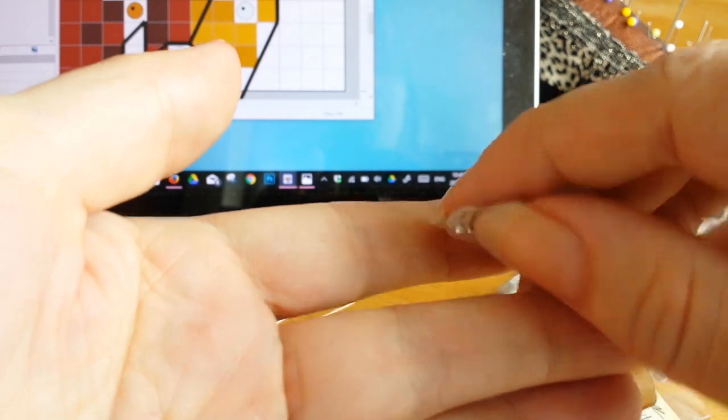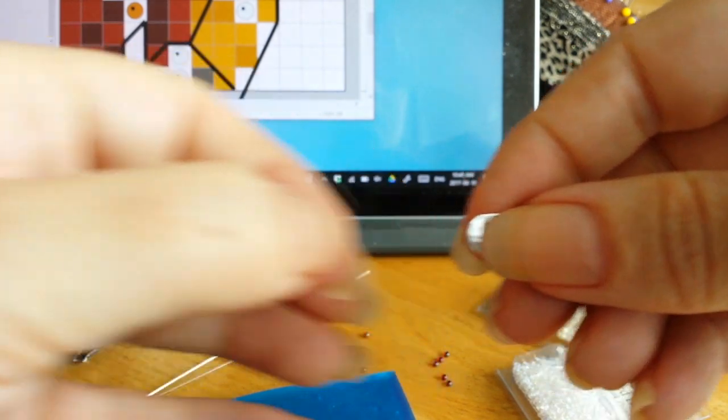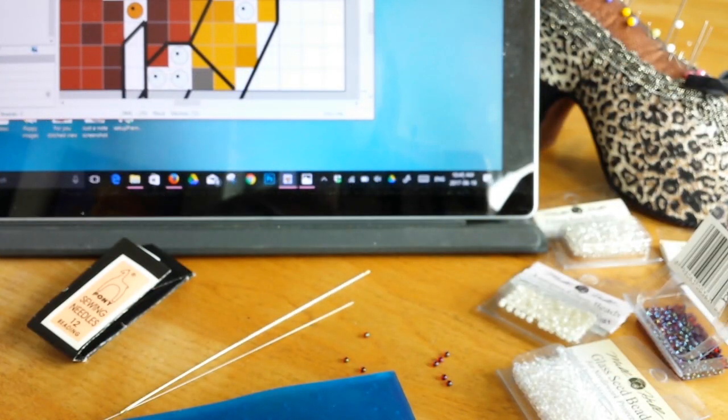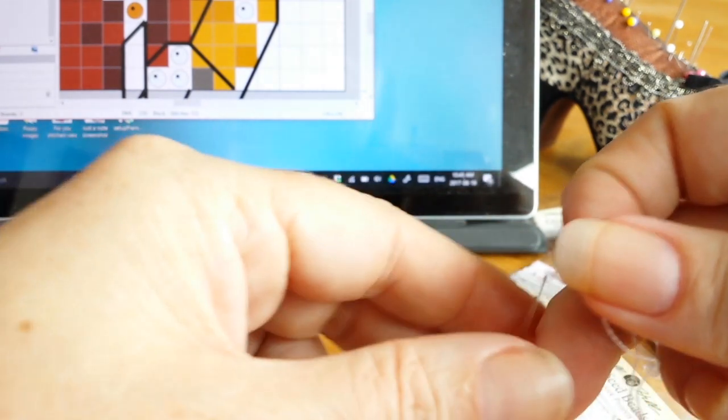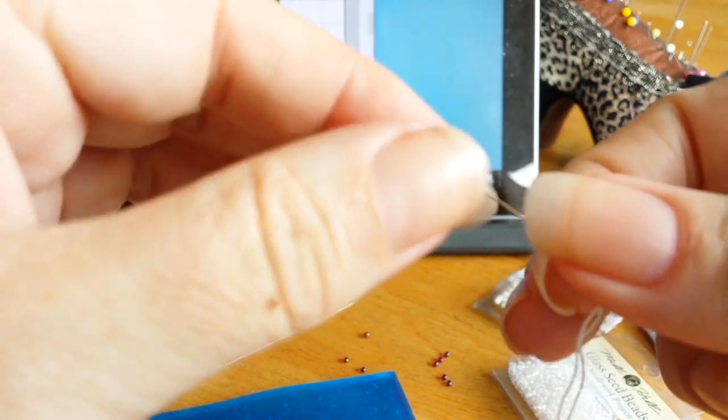So as you can see here, this is one strand of the DMC floss and that works fine for even though it's such a fine eye.